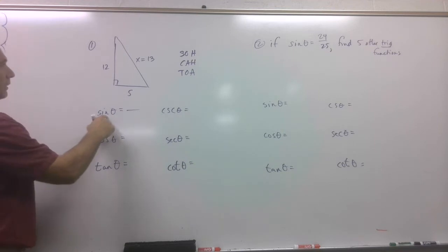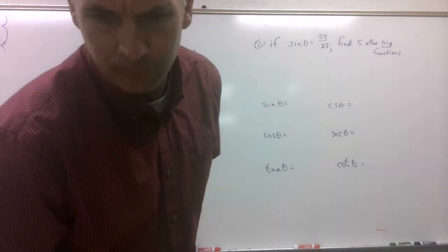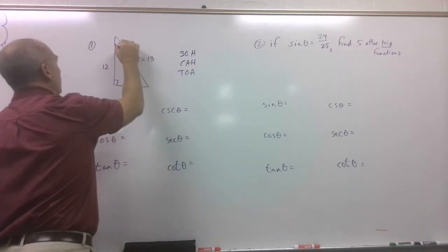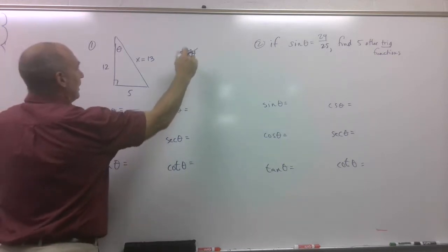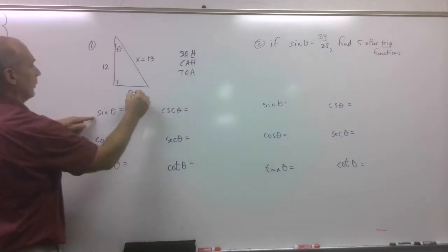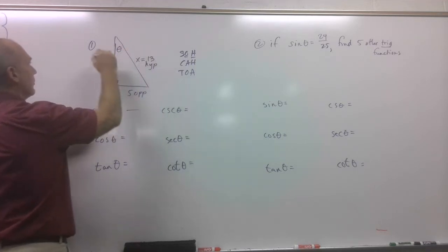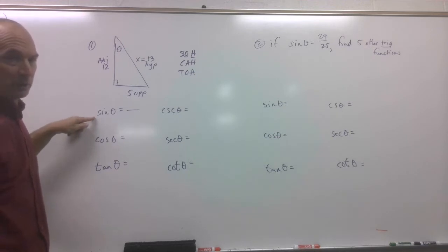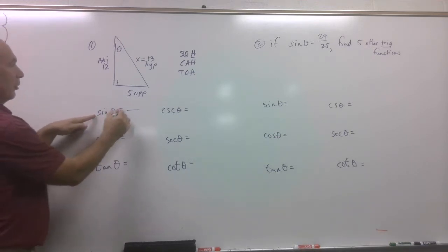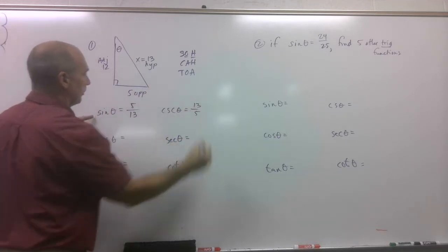What is sine? I forgot to put the theta up here. I don't know where the reference angle is, you can't do these problems. Sine is opposite over hypotenuse. Well, this is my opposite side, this is my hypotenuse. Therefore, this must be my adjacent. Really good idea to label those sides right away. So I know my opposite is 5, my hypotenuse is 13. You can go ahead and steal the reciprocal for the other one.